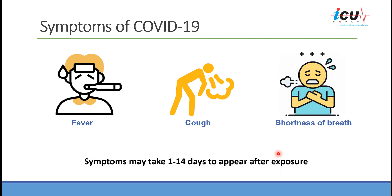The symptoms of COVID-19 are fever, cough, and shortness of breath — they may come as a combination, one after the other, or at the same time. Symptoms may take 1 to 14 days to appear after exposure to an infected case, so the incubation time is prolonged, and there is potential transmission of the virus during this period as well.